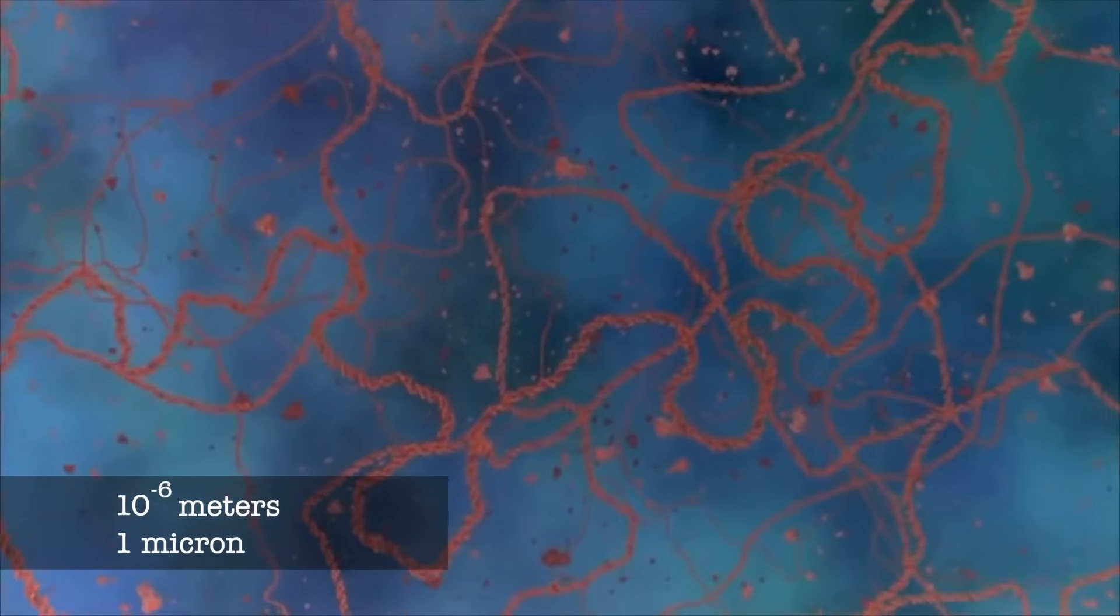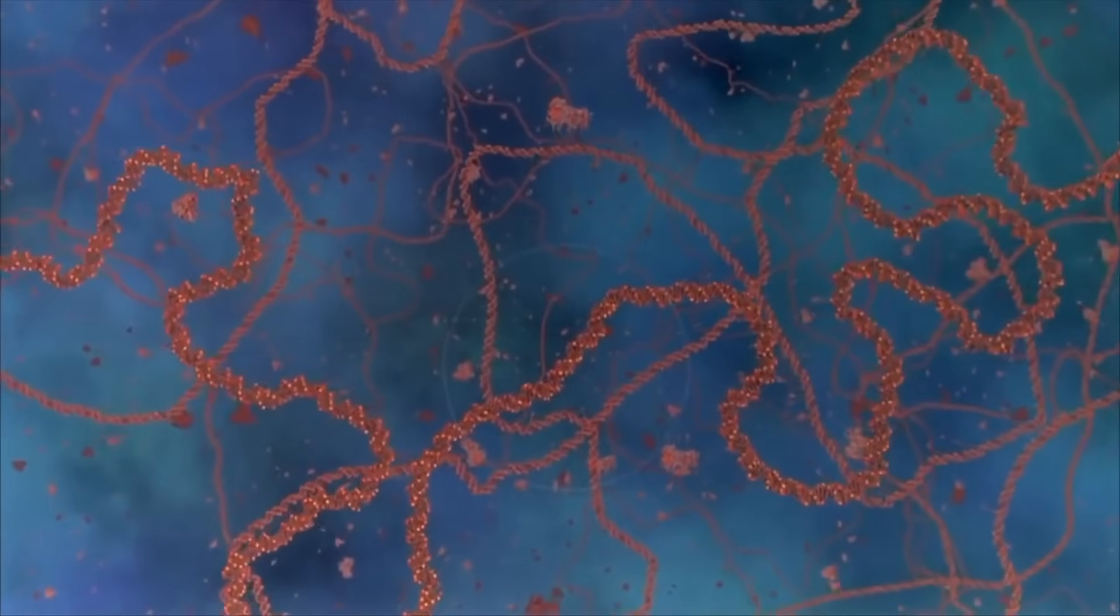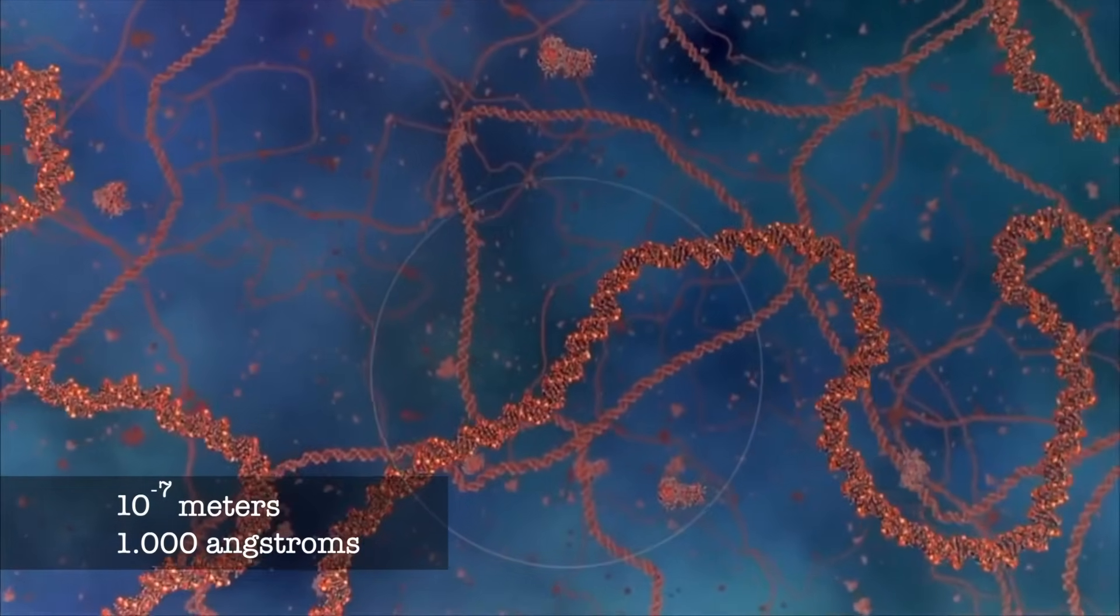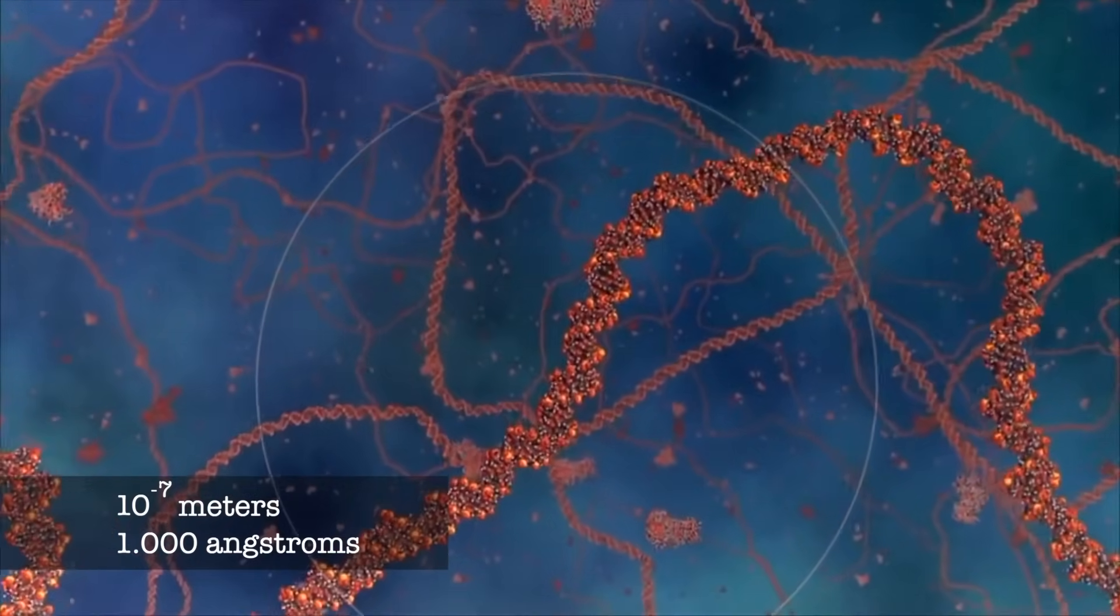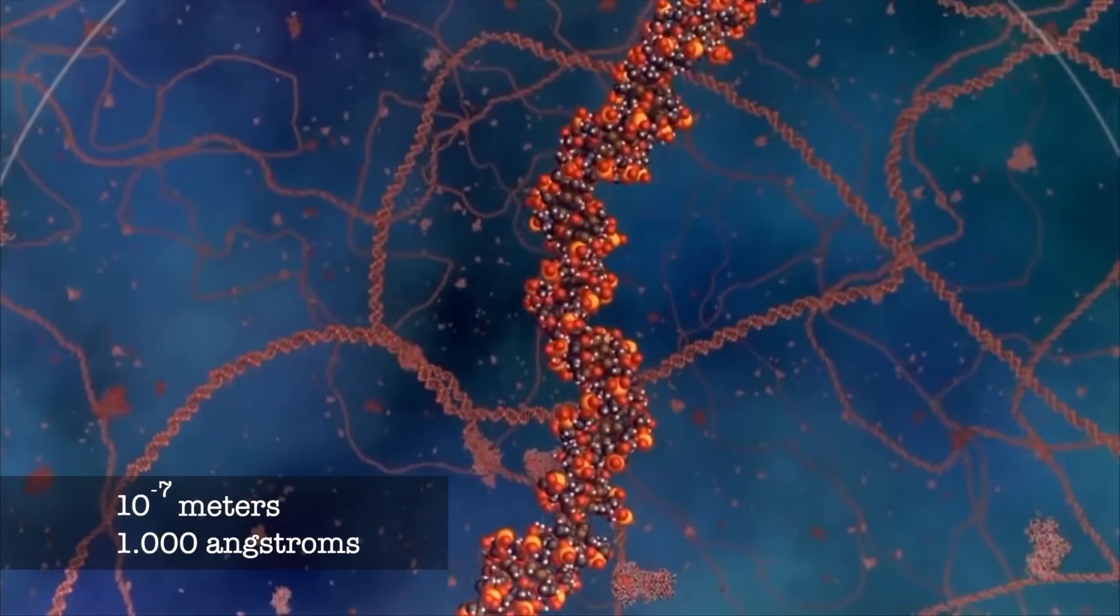DNA holds the chemical codes for the reproduction of most organisms on the planet, whether they're paramecia, people, or petunias.